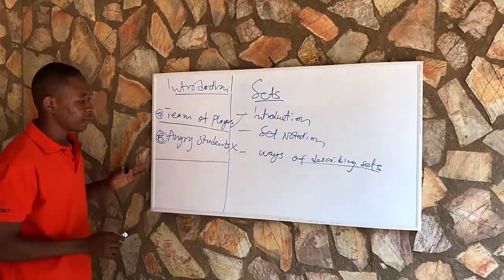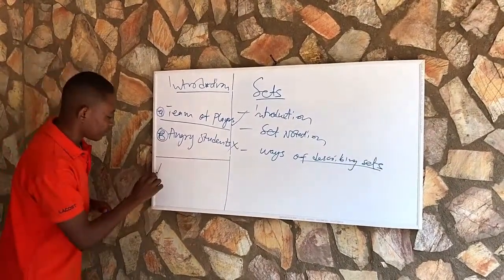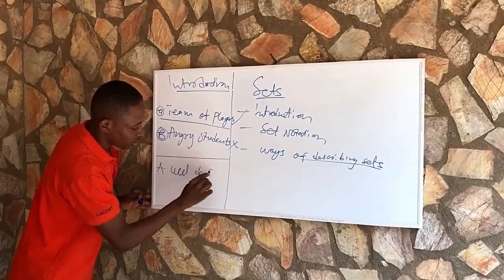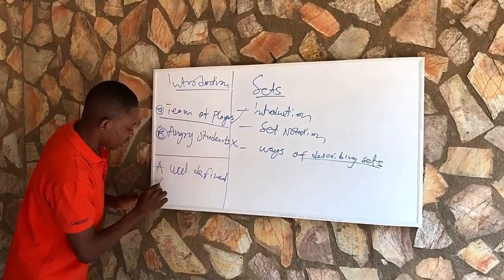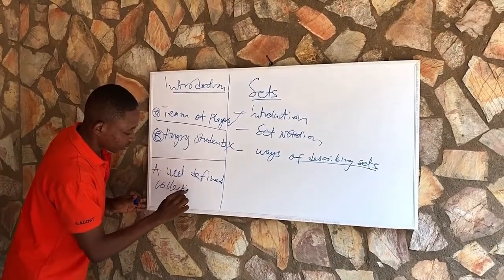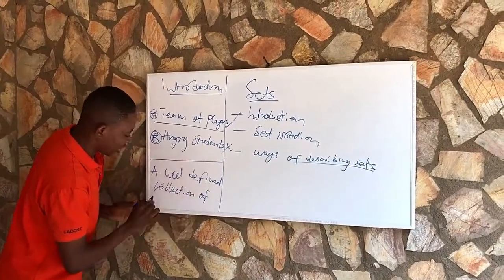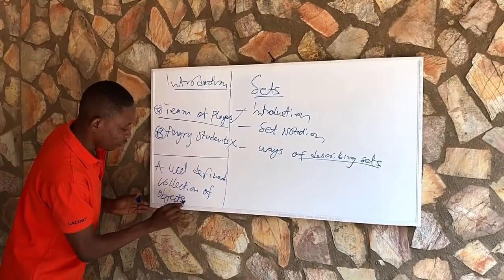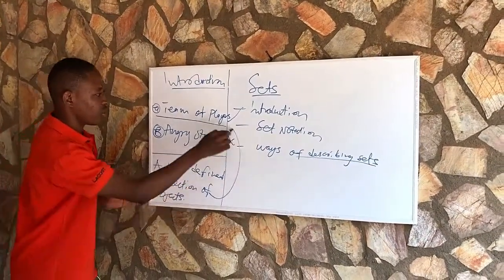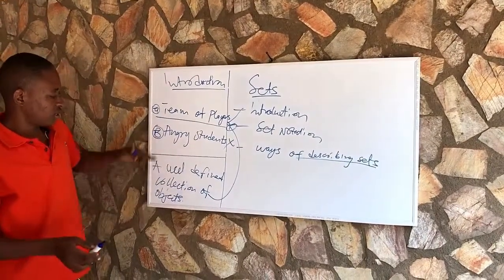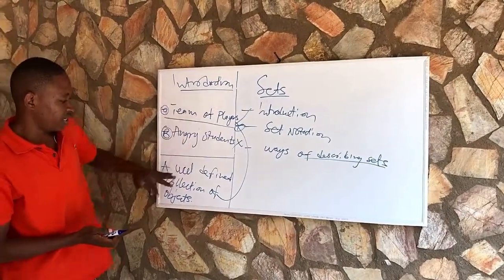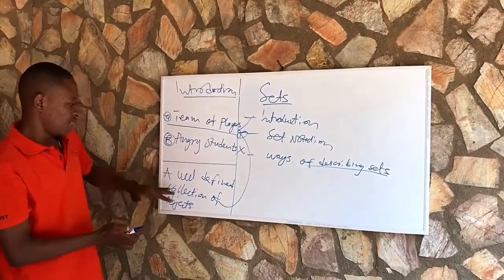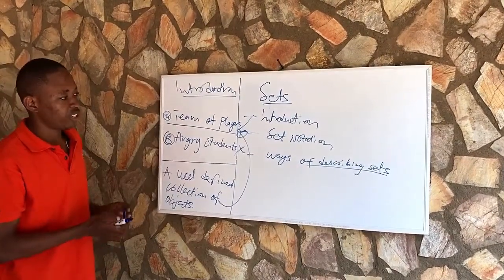So in this case, we can clearly define a set as a well-defined collection of objects. Going back to example A, we can see that a team of players is well-defined and it is a collection of players, so that fits our definition perfectly.